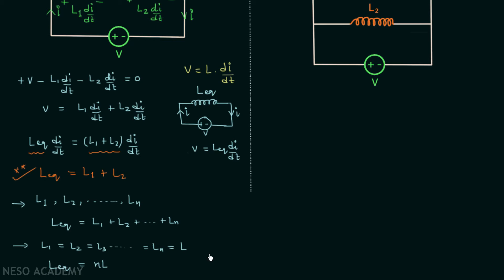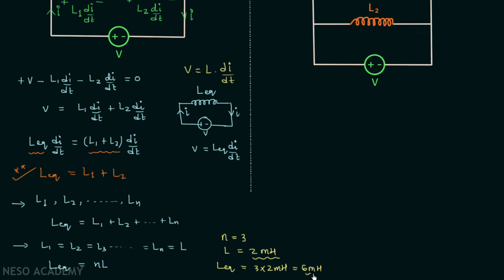For example, if three inductors are connected in series and the inductance of each inductor is 2 mH, then the equivalent inductance equals 3 multiplied by 2 mH, which equals 6 mH. Compared to 2 mH, 6 mH is more, so when three inductors are connected in series, the inductance increases.